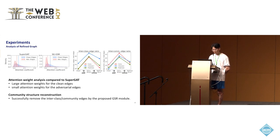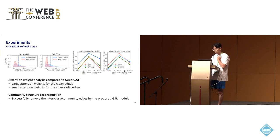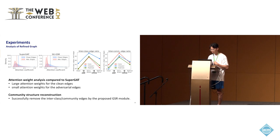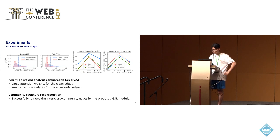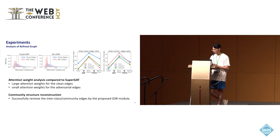We also conducted analysis on attention weights compared to SuperGAT. We observed larger attention weights for clean edges and smaller attention weights for adversarial edges compared to SuperGAT. Additionally, we analyze community structure reconstruction: since adversarial attacks increase inter-class or inter-community edges, after refining the attacked graph with SG-GSR, the method successfully removes inter-class and inter-community edges.